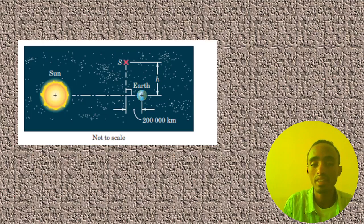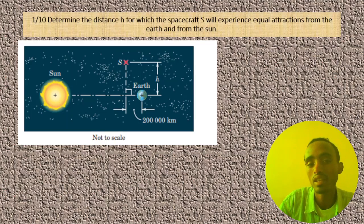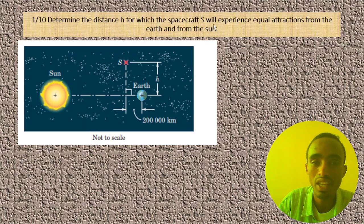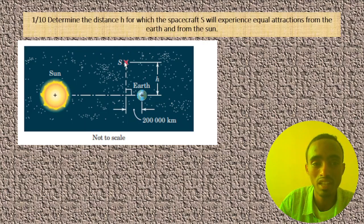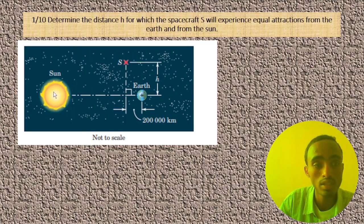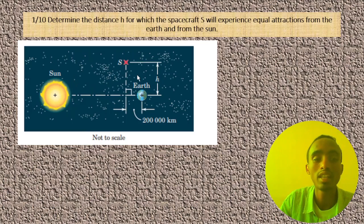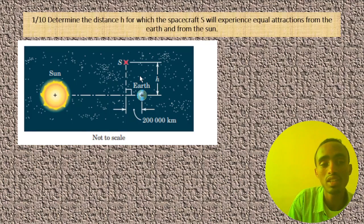For this tutorial, I recommend completing the prerequisite question and coming back here. We will solve this problem: determine the distance H for which the spacecraft S will experience equal attracting force from Earth and from the Sun. Here we can see the spacecraft experiencing two forces — one from Earth and one from the Sun — at different distances and orientations.